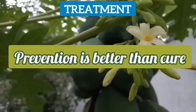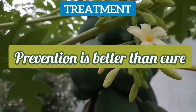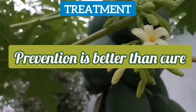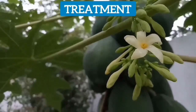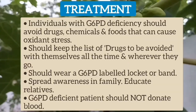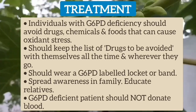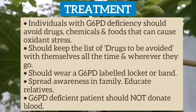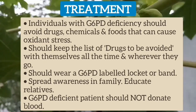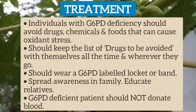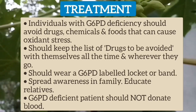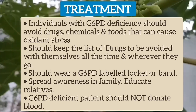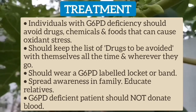For treatment, prevention is most important. Individuals with G6PD deficiency should avoid drugs, chemicals, and foods that can cause oxidant stress, which can ultimately trigger a hemolytic crisis. Patients should keep a list of drugs and chemicals to be avoided at all times. They should wear a G6PD-labeled locket or band, and spread awareness in the family and educate relatives about this illness. G6PD-deficient patients should not donate blood.